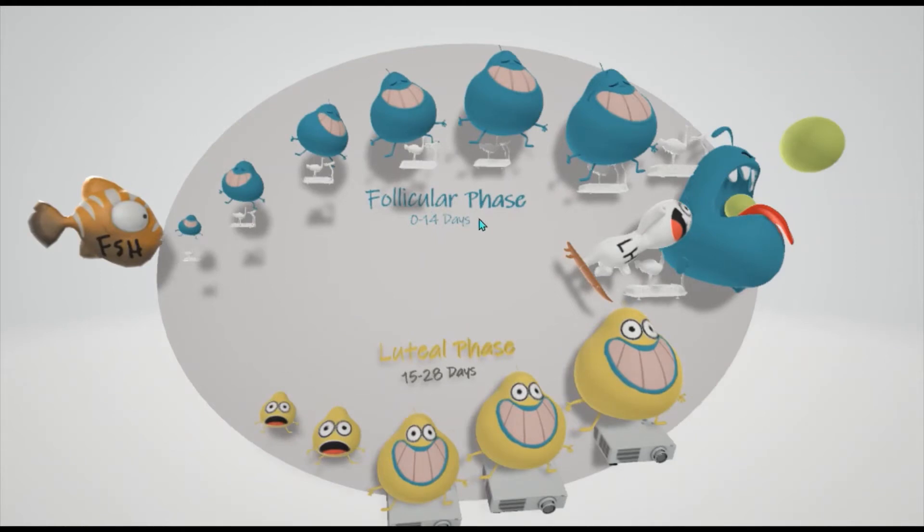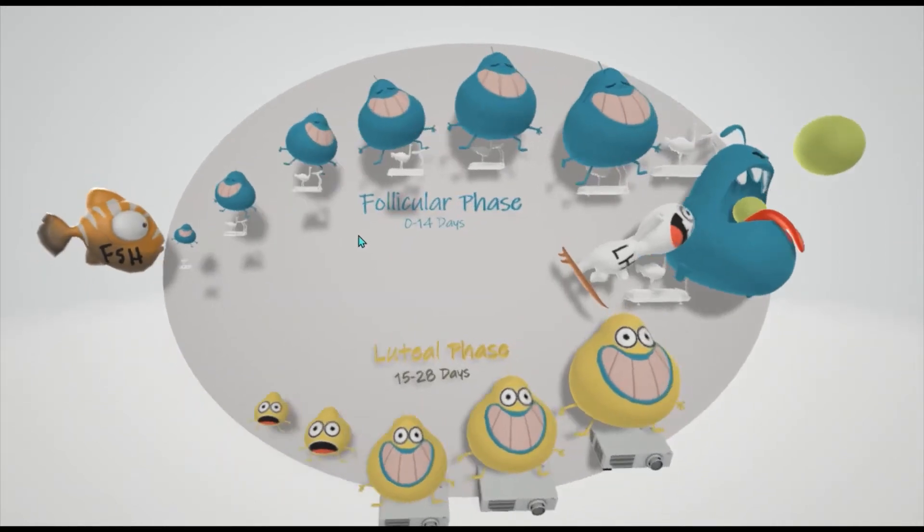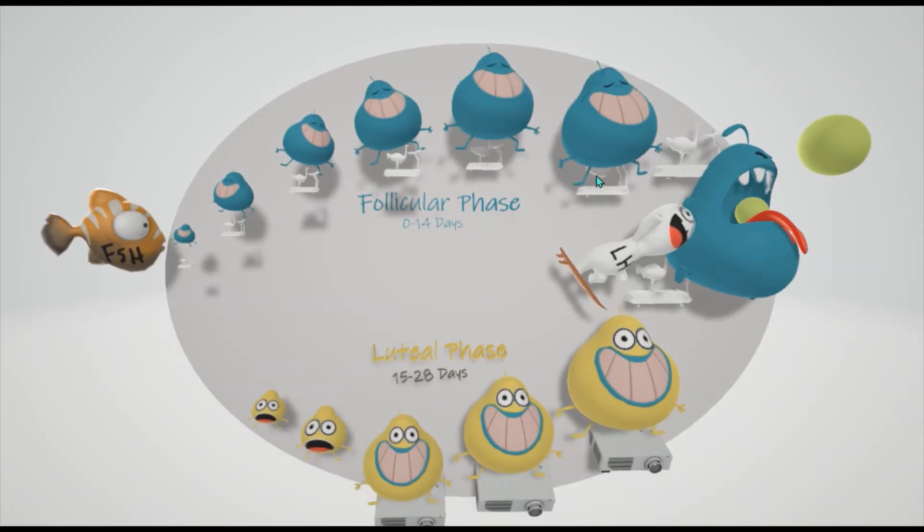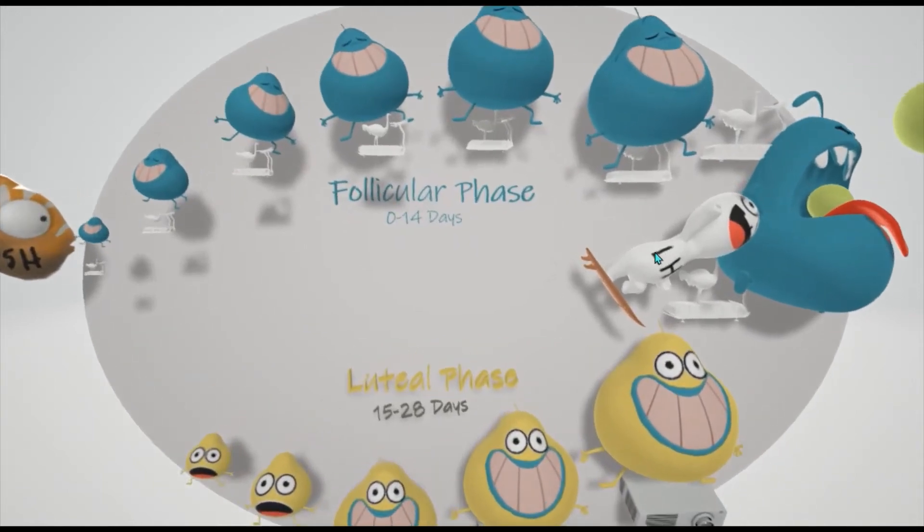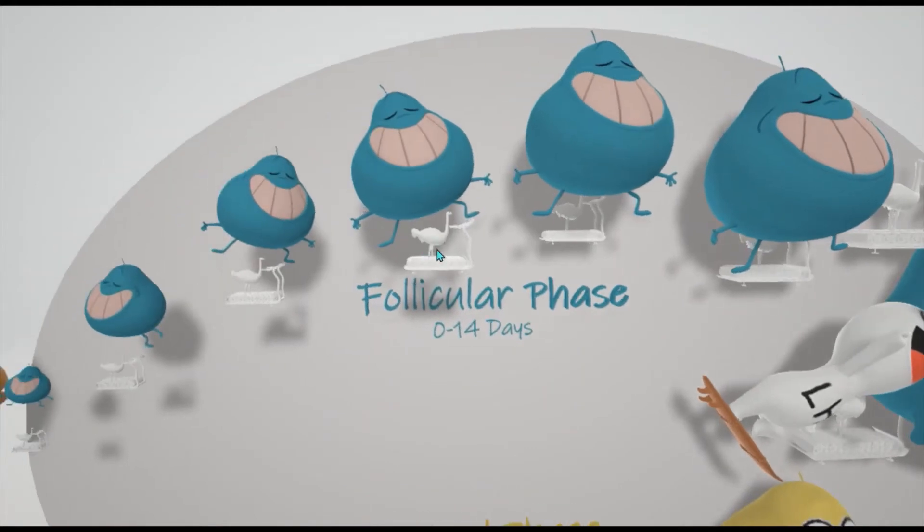In the follicular phase, that's the first 14 days on average. What happens is the follicle secretes estrogen. Here, if you look closely, this follicle guy is releasing these ostriches at the gym - ostriches on a treadmill. The ostrich at the treadmill at the gym, that's for estrogen.